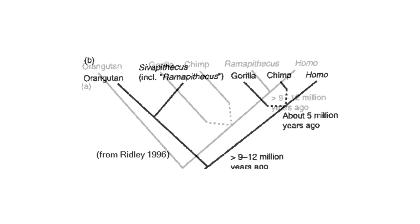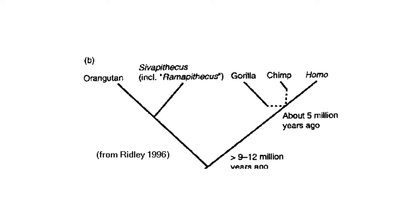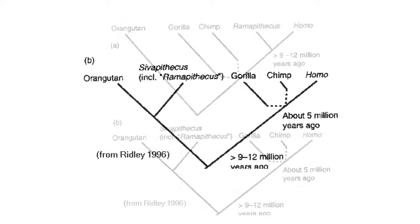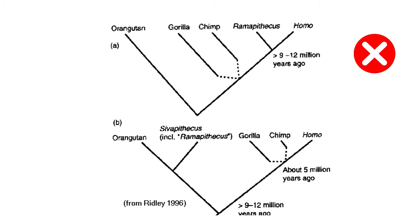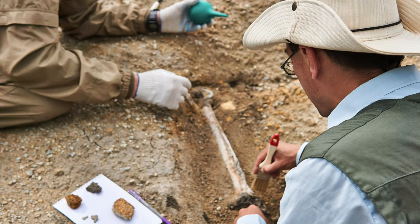However, in 1967 molecular studies suggested that humans and apes split from a common ancestor around 5 million years ago. This conflicted with the idea that a 14 million year old fossil from Asia could be a human ancestor unless it was also an ancestor of apes. Some asserted that no fossil older than 8 million years could be considered a human ancestor, and this disagreement sparked intense debates leading to the discovery of many new fossils.